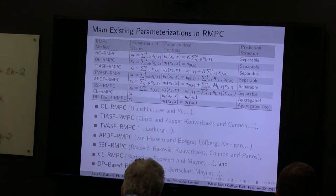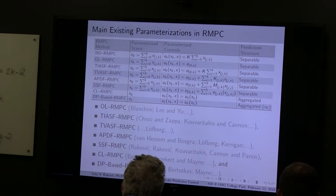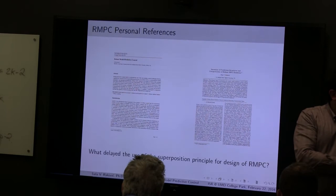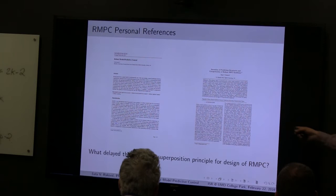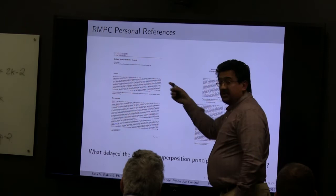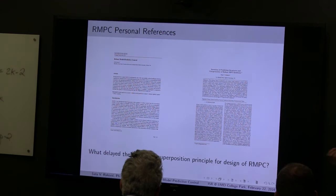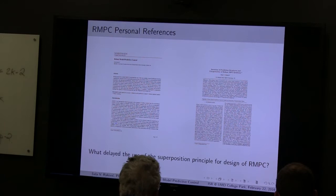In this talk, I'll keep everything at the level of parameterization and not go into technical details — every single parameterization is really a talk in its own right. There are two key papers on this: one written in 2012, a 29-page plenary paper at MPC, and an encyclopedic work for set-theoretic methods in control. An underlying question here is: what delayed the use of the superposition principle for MPC design? It's a question I started asking myself 10 years after doing robust tube-based predictive control. You do all sorts of complicated work and then come back to very simple elements.